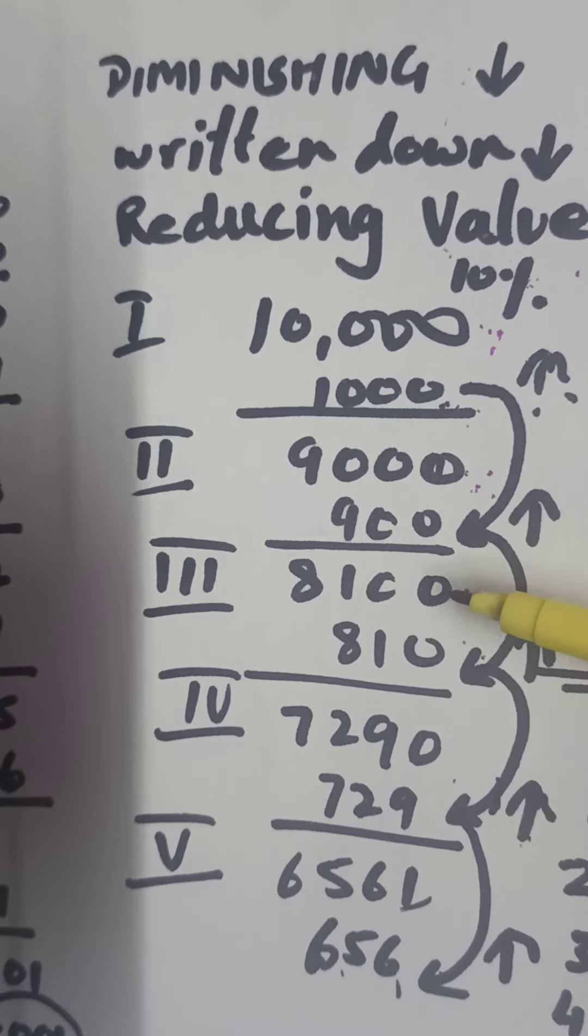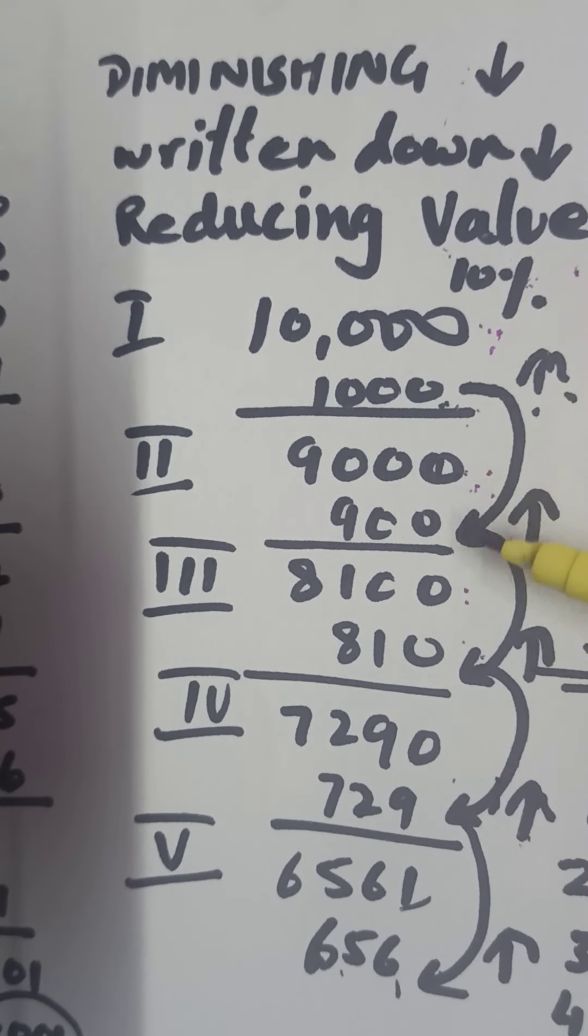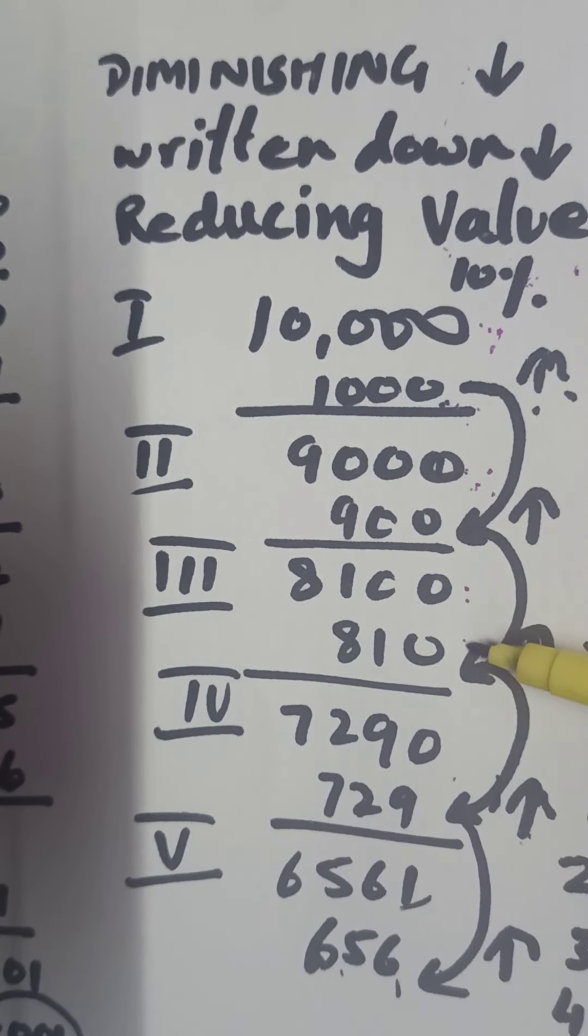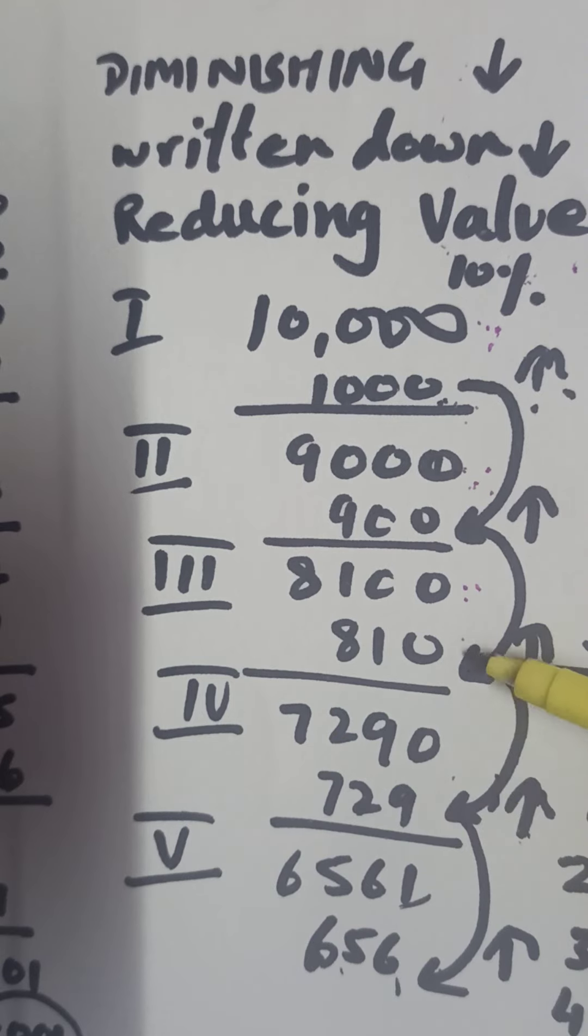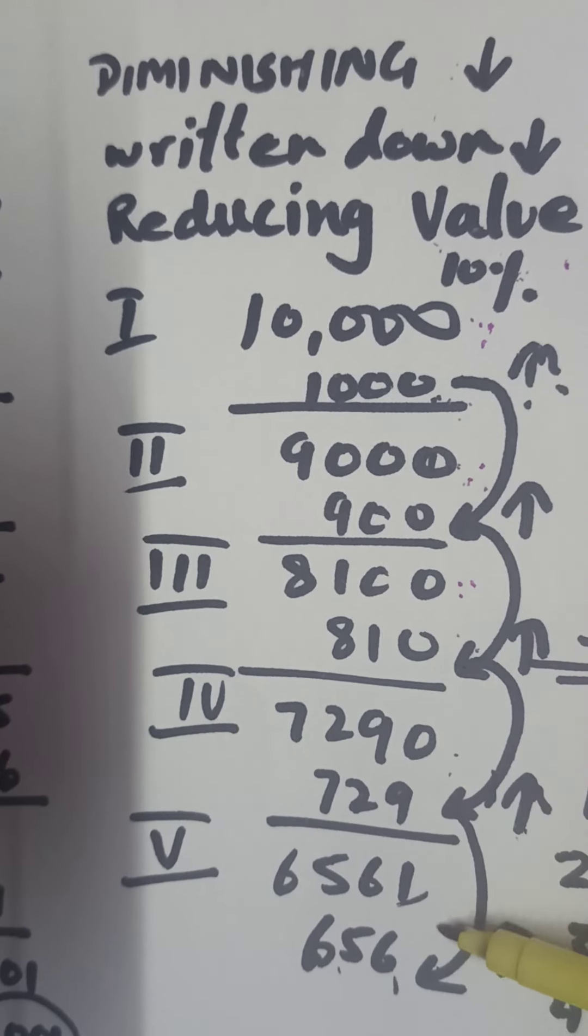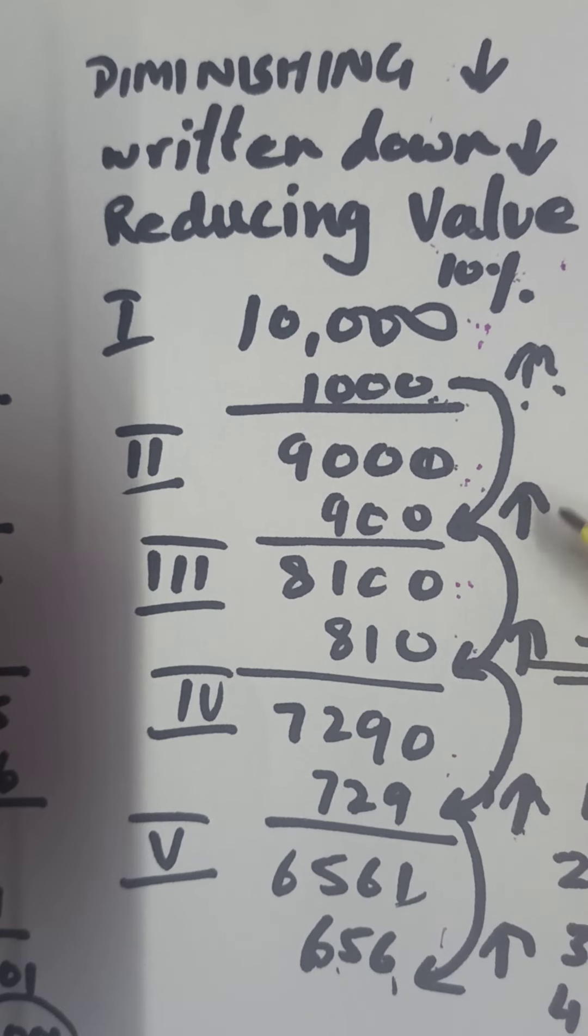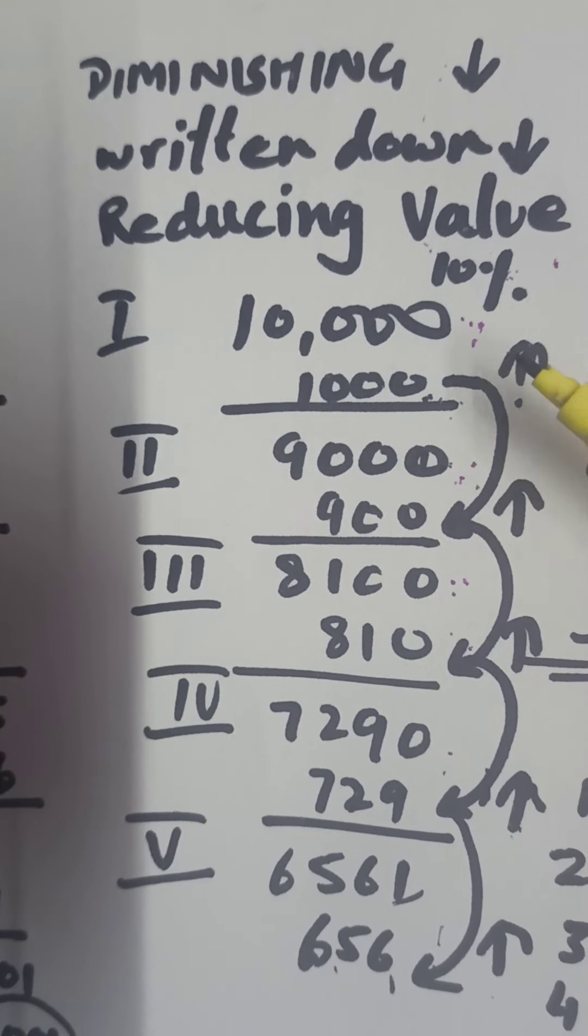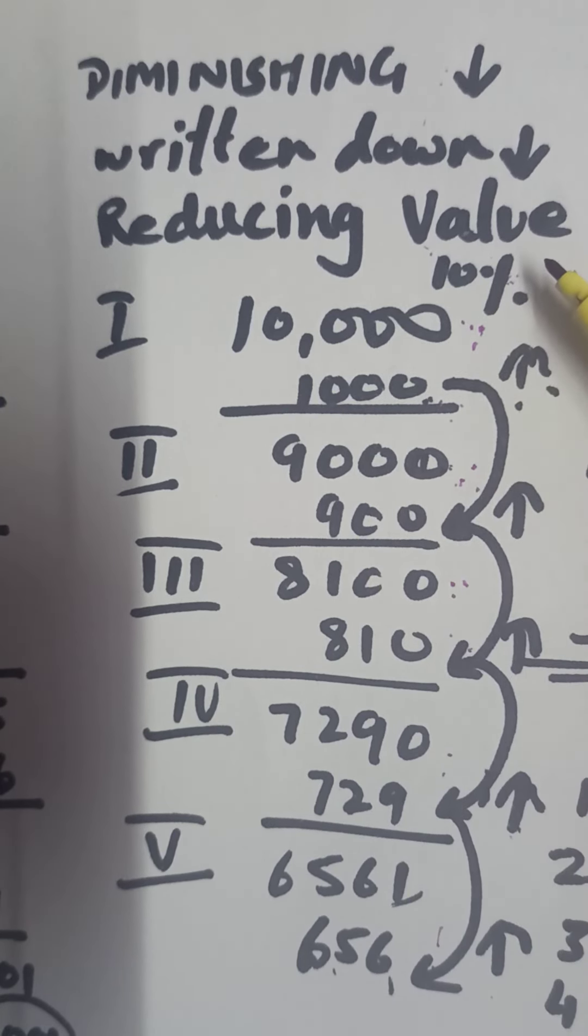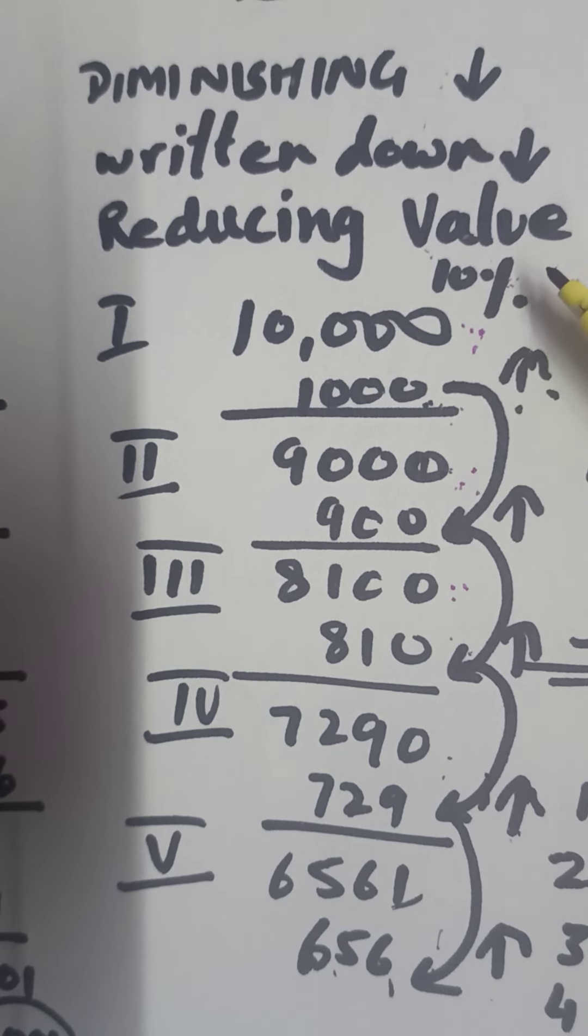Next, third year: 10% to be charged as depreciation but 10% of 8,100, that is 810. Then 10% of the reduced value, and it goes on. That is how depreciation also goes on reducing each year. That's why it's called the reducing value method or diminishing balance method.